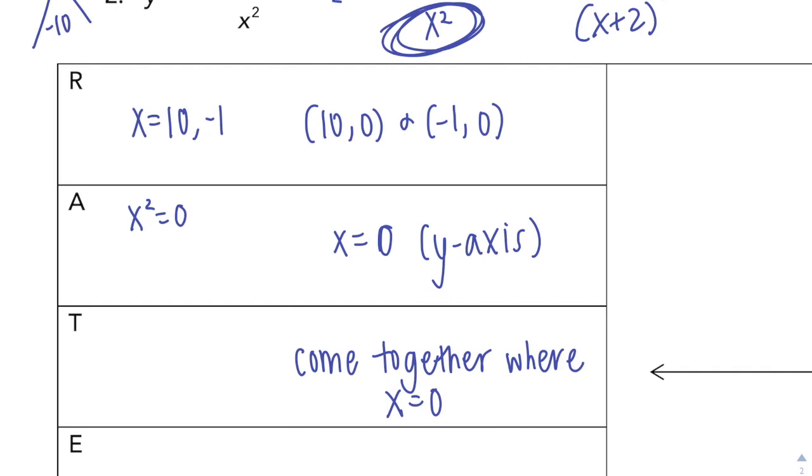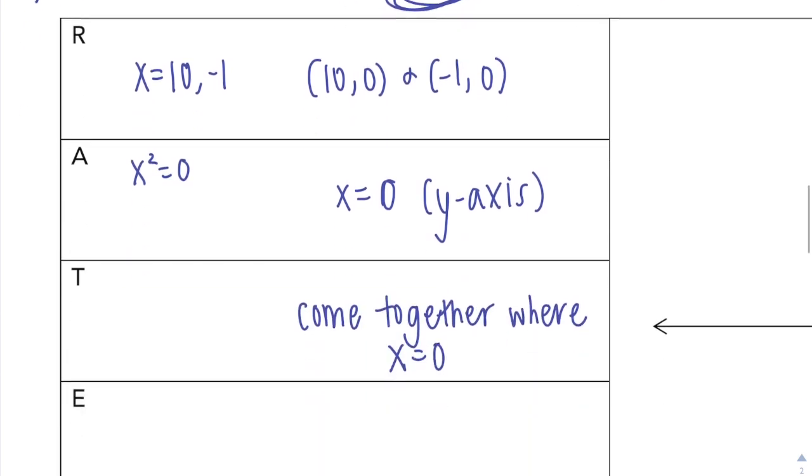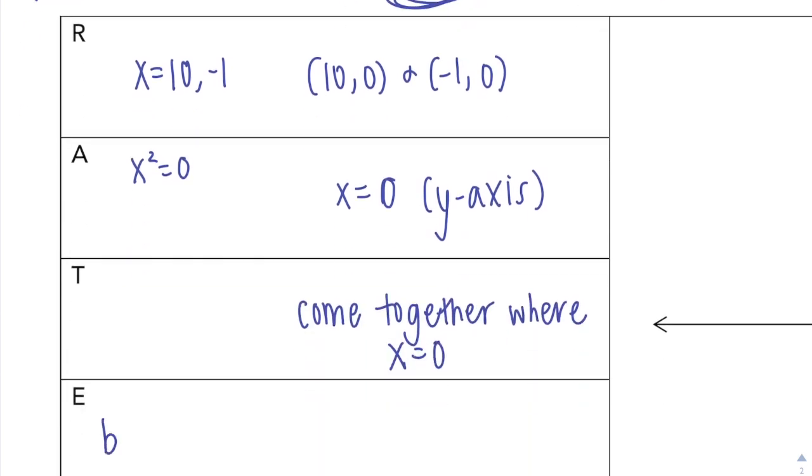And then E, end behavior, my horizontal asymptotes. It's balanced. So if I look at my leading coefficients, 1 over 1, that's it. So y equals 1.